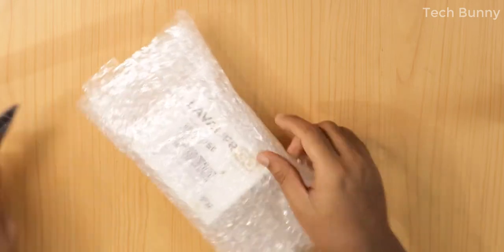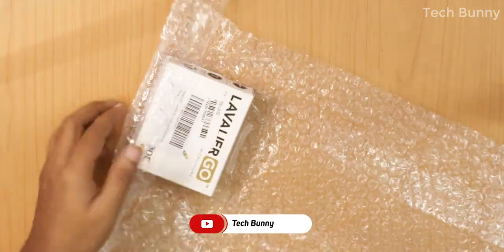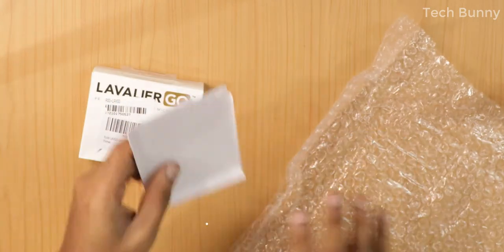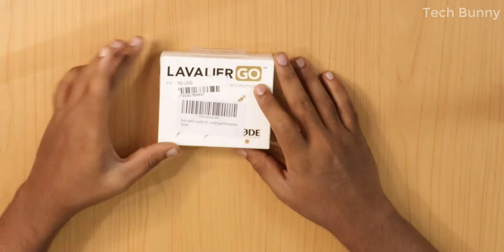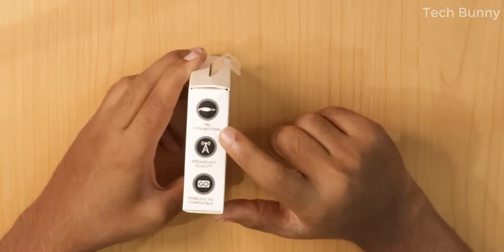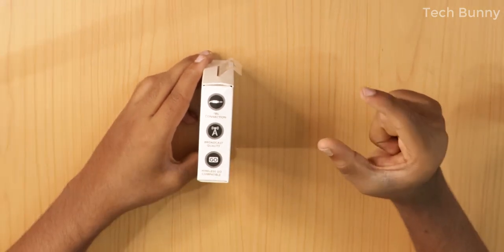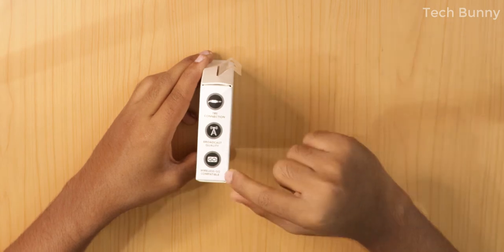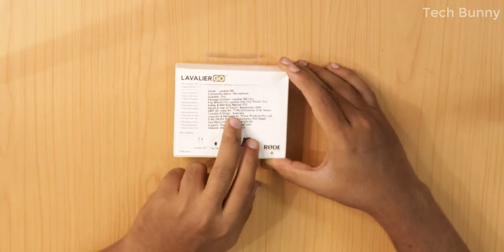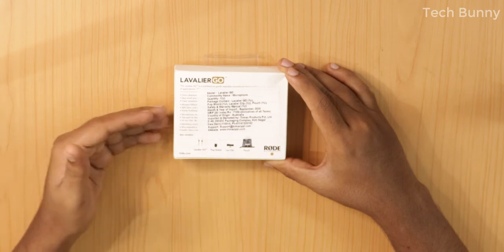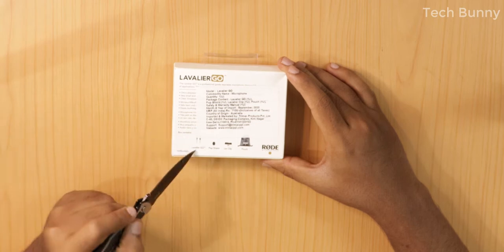It comes in this tiny little package - Lavalier Go microphone from Road, and they mentioned some specs here. It has TRS connection and broadcast quality. It's Wireless Go compatible - if you have Road's small wireless transmitters, you can use this microphone with it. On the back they've given some more specs. The pricing is 7,100 rupees but during offers it sometimes decreases.